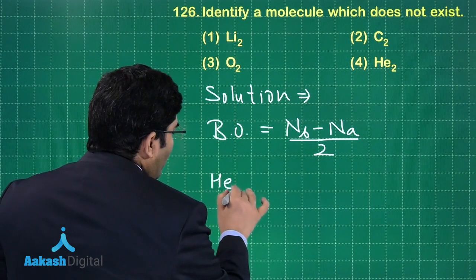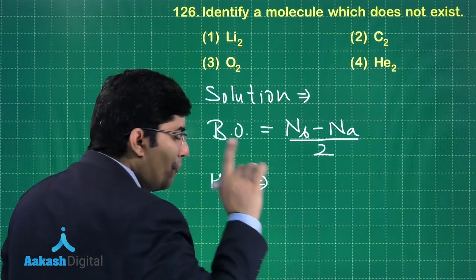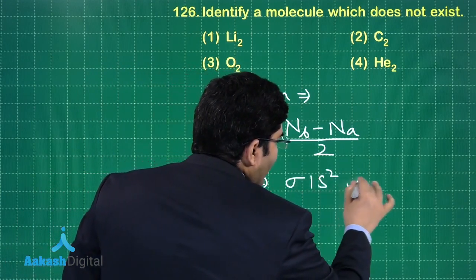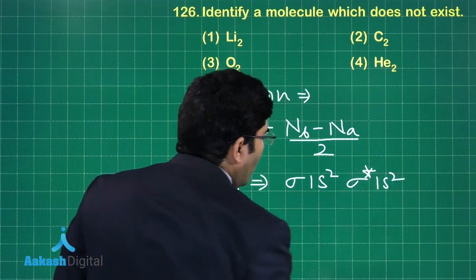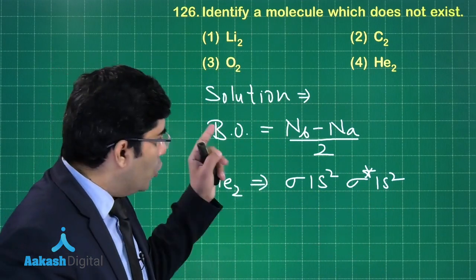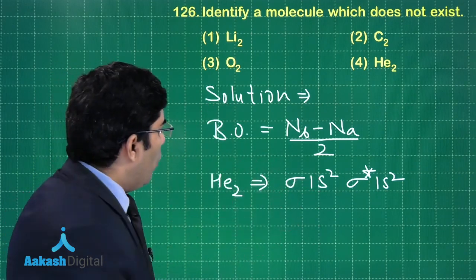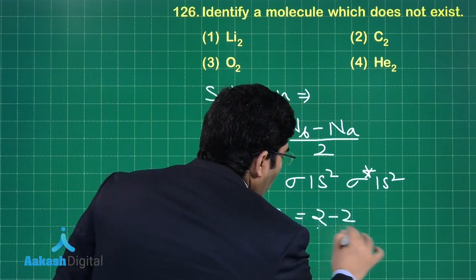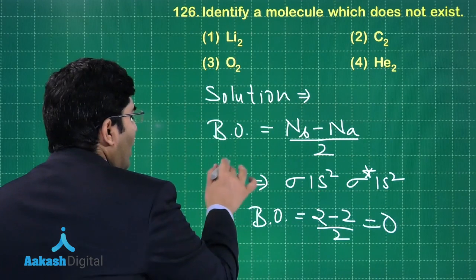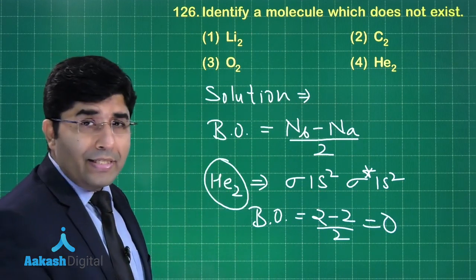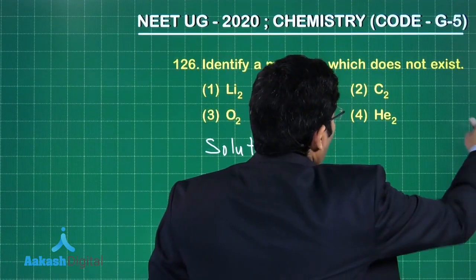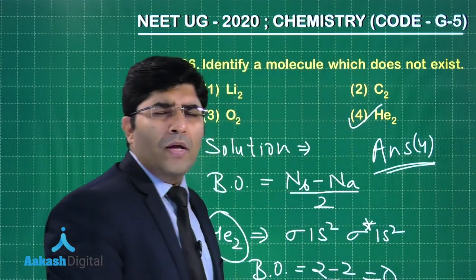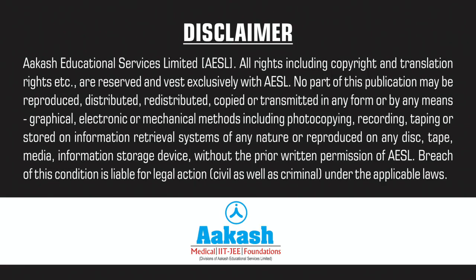If you take He2, in this case we have four electrons and its electronic configuration will be sigma 1s2, sigma anti-bonding 1s2. So how many electrons in bonding orbital? 2. Anti-bonding? 2. So the bond order will be 2 minus 2 by 2 equals 0. That's why He2 will not exist. That's why this fourth option He2 will be our answer.